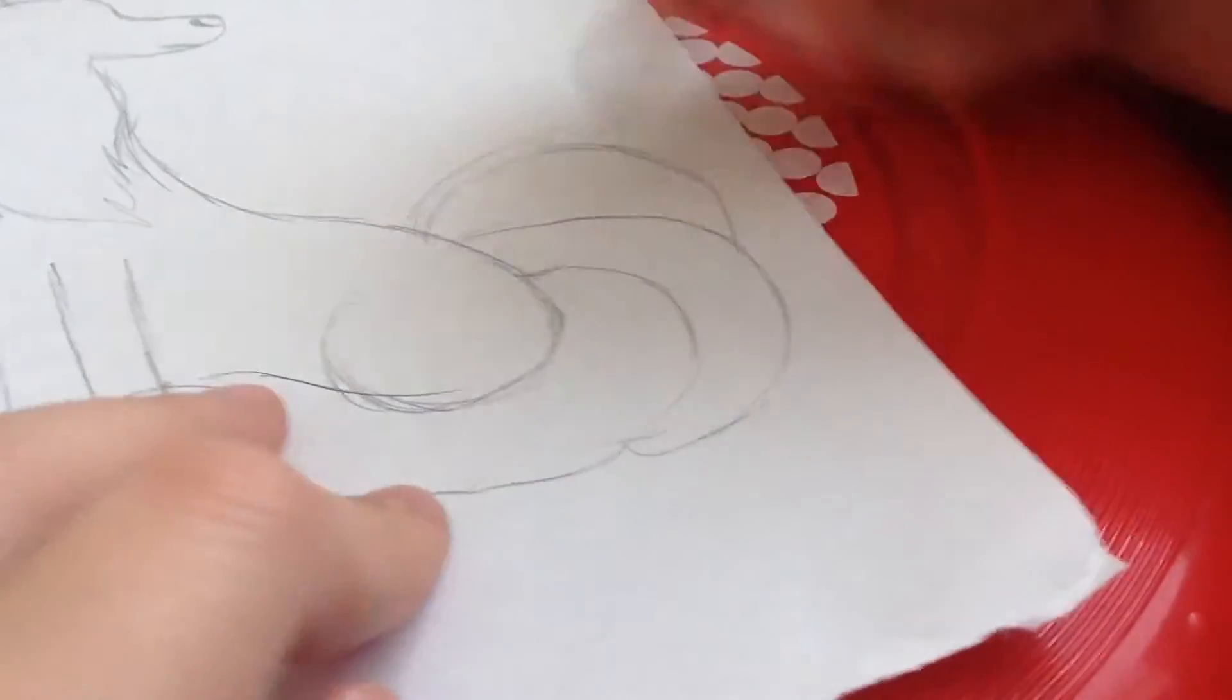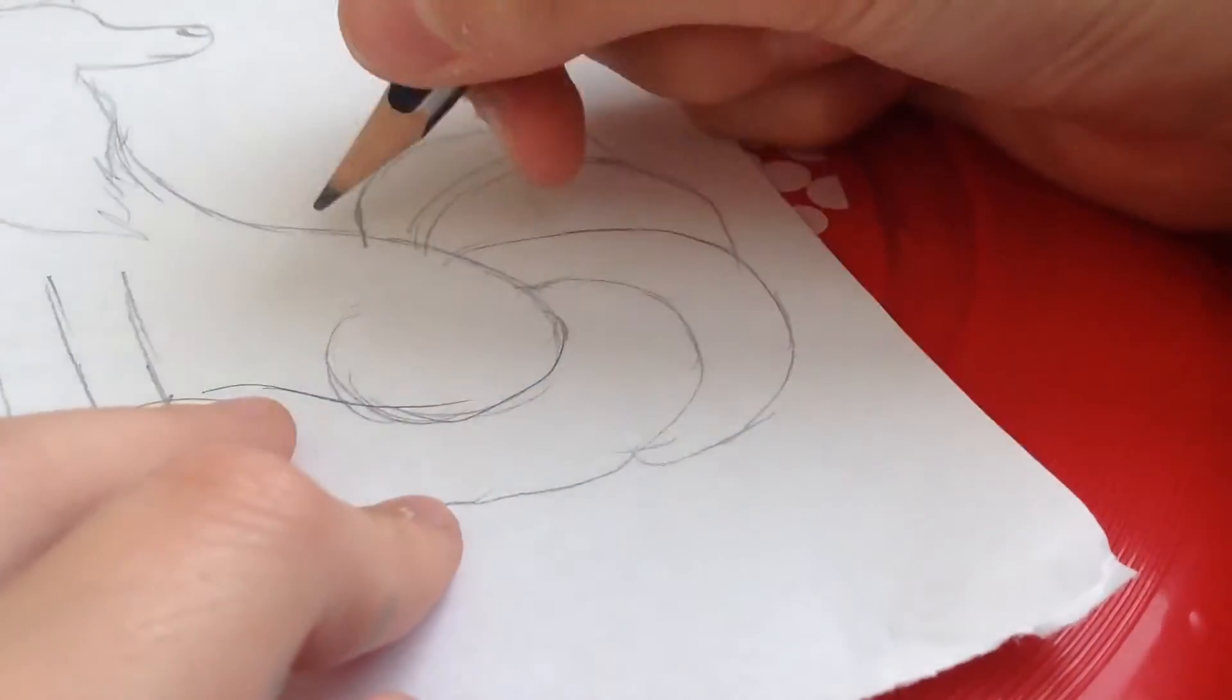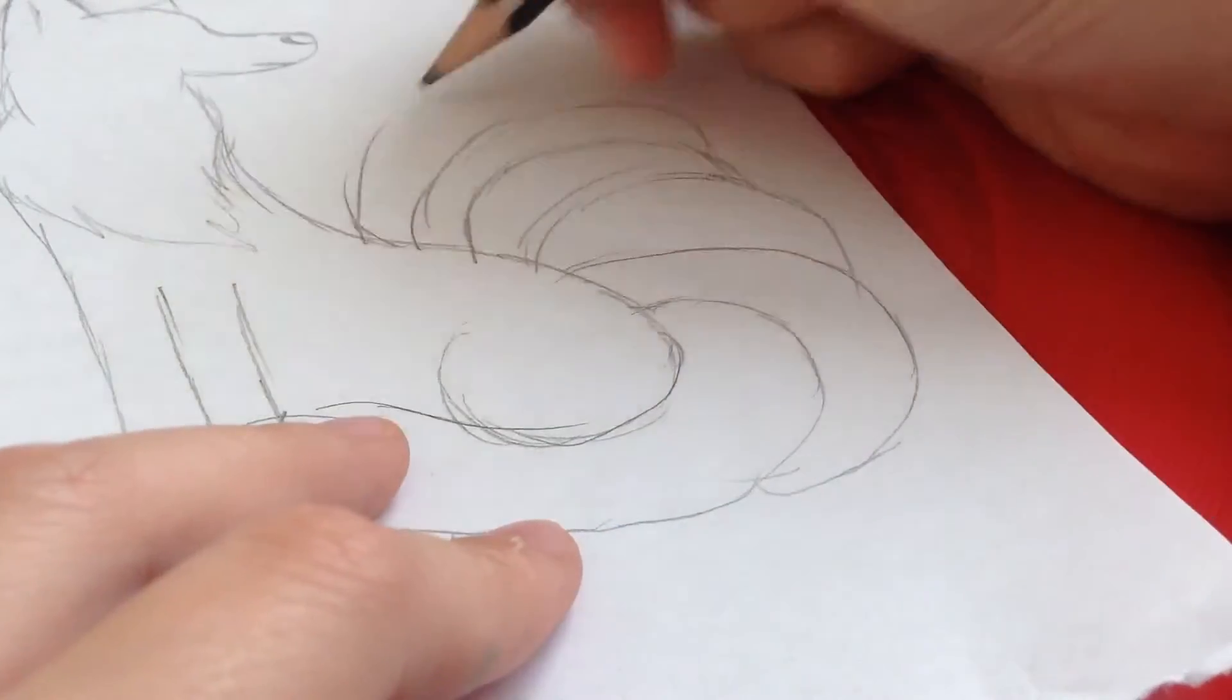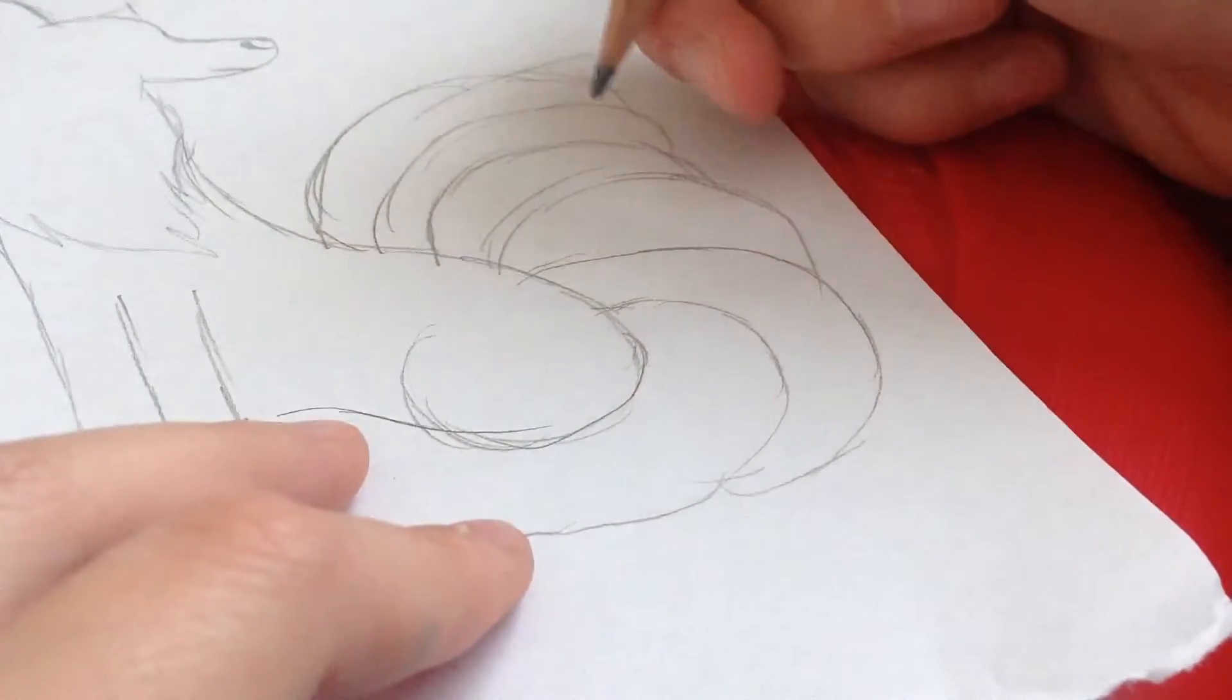No, actually I'm going to draw six. One, two, three. Four. Five. Six. So, there's six tails.